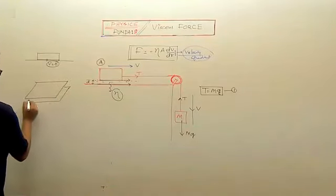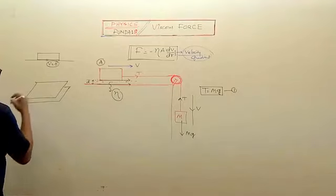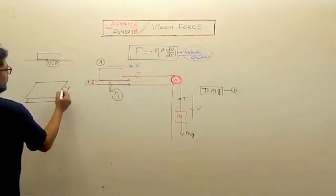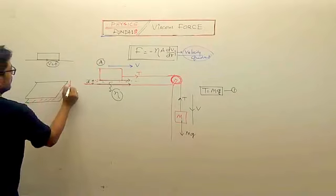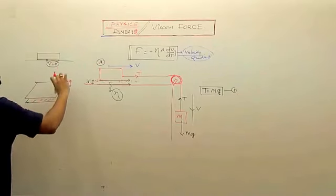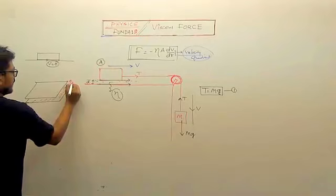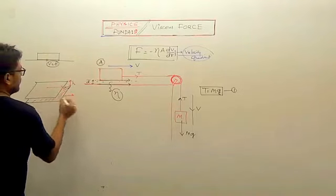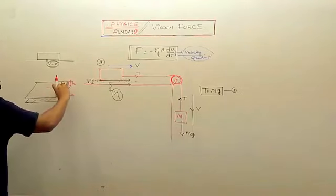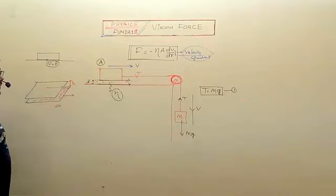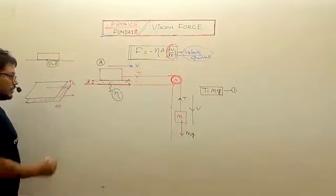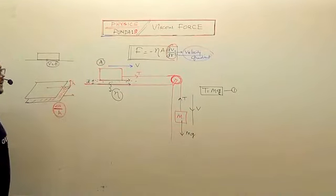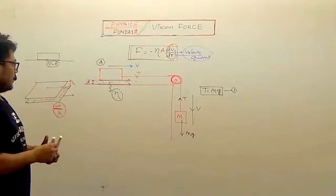If we consider two different layers and the separation between these two layers is h, one has some velocity and the other has some velocity. The velocity difference is del v. The formula has dv by dr, which is this h in case of uniform change. This is the velocity gradient.